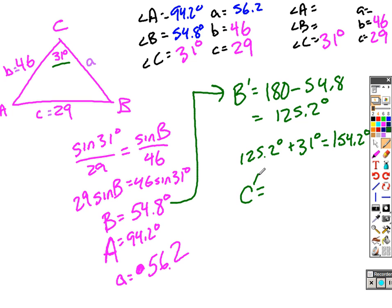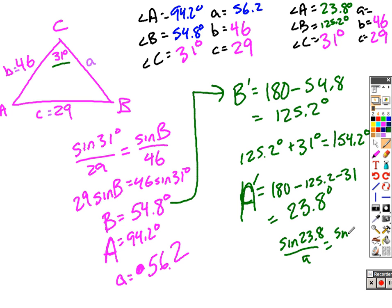So, to find my last triangle, my last angle, I'll call it C prime, or I'm sorry, again, A prime here in this problem. I need to do 180 minus 125.2, minus 31. And when I do that, I'll find that angle A, in this case, is 23.8 degrees. So, now I know angle A, 23.8 degrees. I know angle B, which was 125.2 degrees. I need to find, then, side A in the end, and I do it the same way I've done before. Sine of 23.8 over side A is going to equal sine of 31 degrees over 29 here. When I solve, I should end up getting that A equals 22.7.